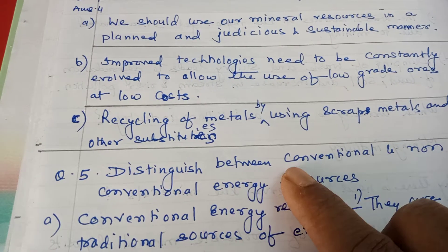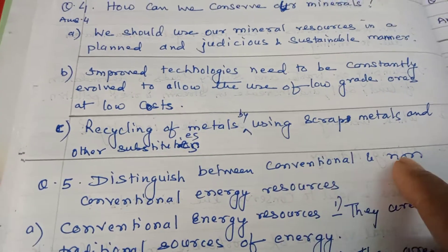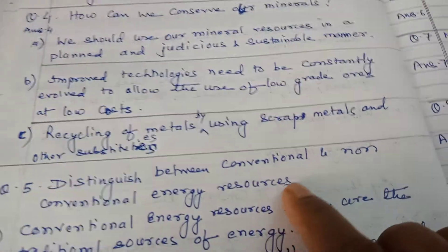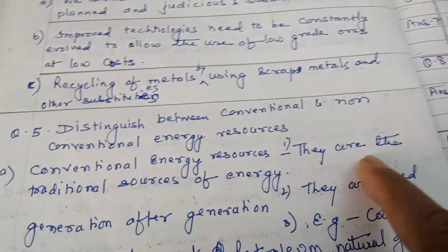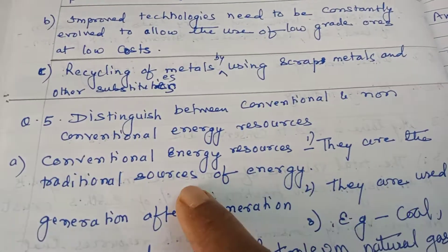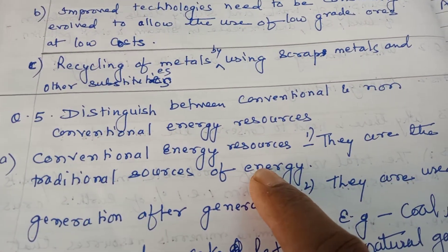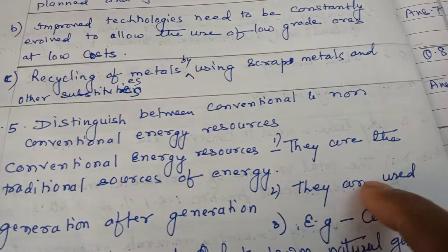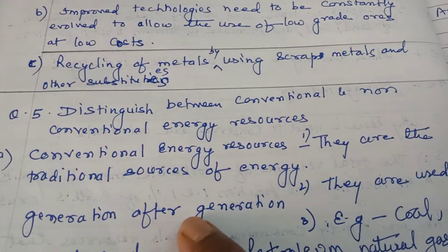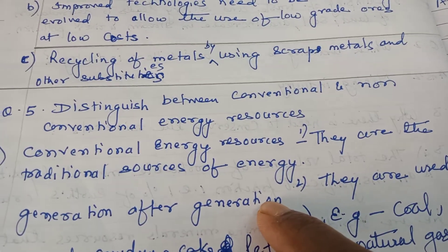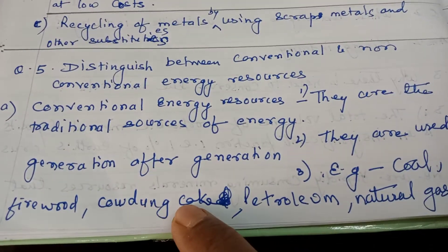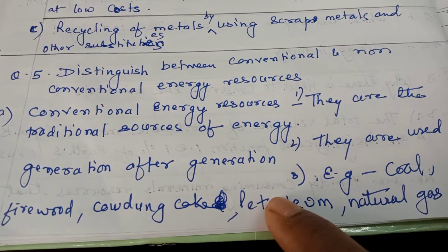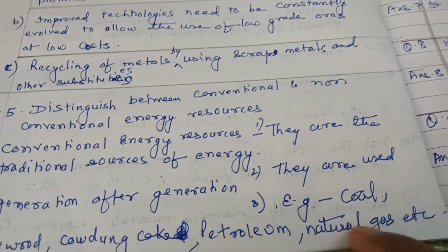Now we distinguish between conventional and non-conventional sources of energy. Conventional sources of energy are the traditional sources of energy used generation after generation. Examples include coal, firewood, cow dung cake, petroleum, natural gas, etc.